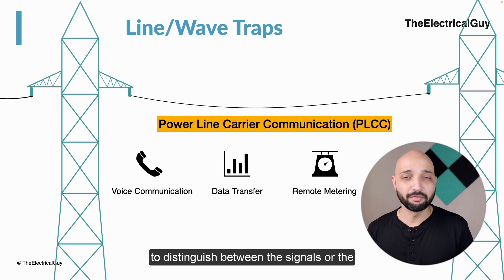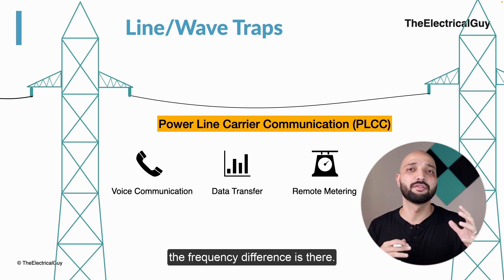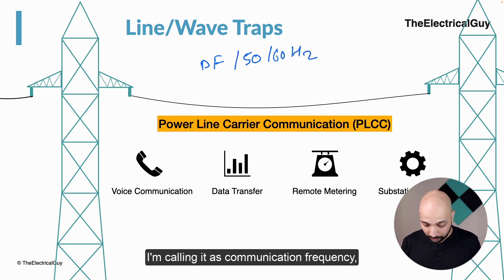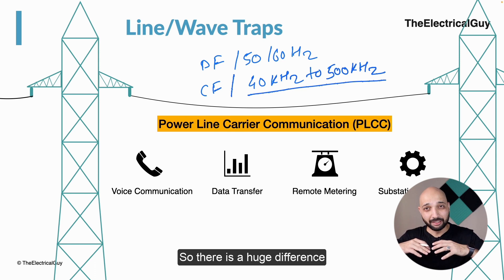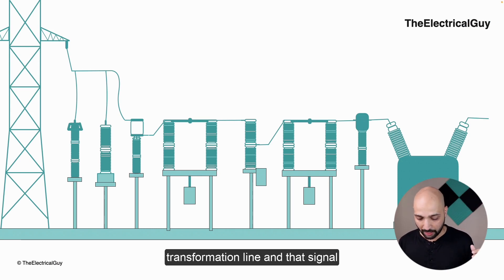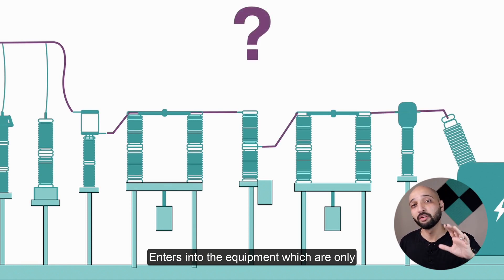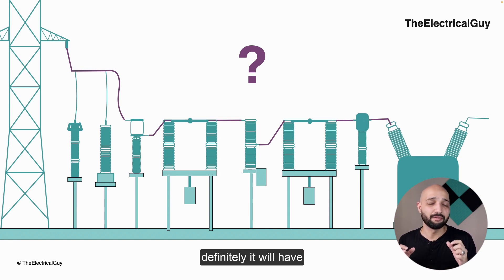To distinguish between power frequency current and communication signals, there is a frequency difference. The power frequency signal operates at 50 or 60 hertz, whereas the communication frequency may vary from 40 kilohertz to 500 kilohertz. There is a huge difference between these frequencies, and if you are transferring communication signals via the transmission line, that signal can enter into substation equipment which is only designed to carry 50 or 60 hertz.